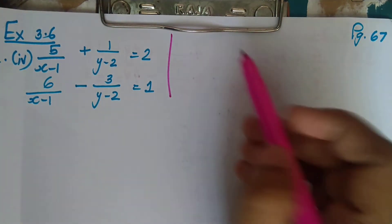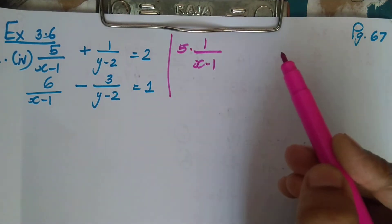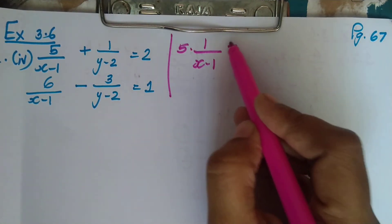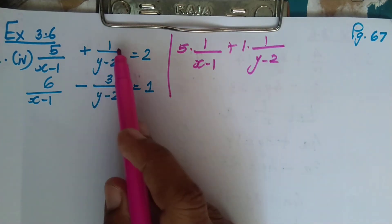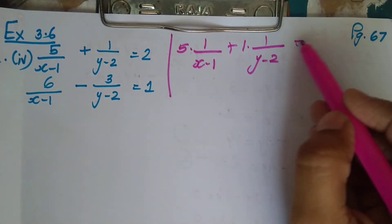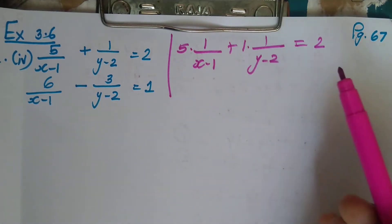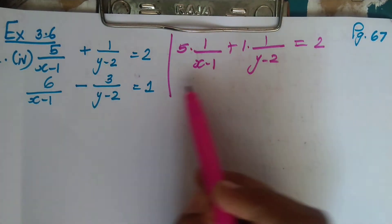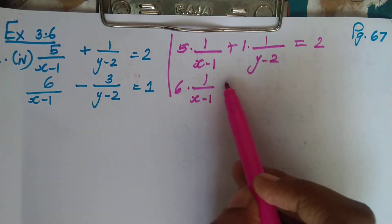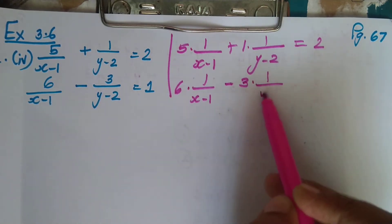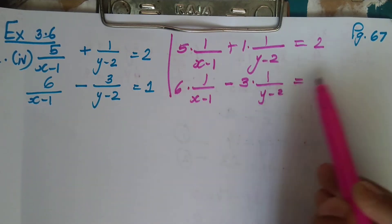First I will split it and show you how. 5 times 1/(x-1) plus 1 times 1/(y-2) equals 2. And 6 times 1/(x-1) minus 3 times 1/(y-2) equals 1.